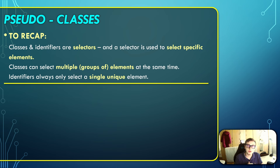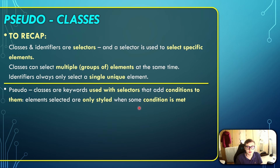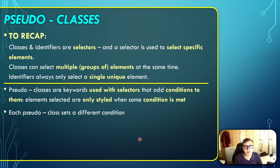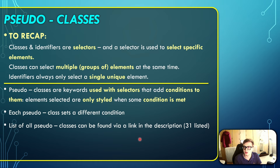Pseudo-classes are keywords used with selectors that add conditions to them. This means that elements selected with the selector are only styled when some condition is met. You can just think of pseudo-classes as the if statements of CSS. Each pseudo-class sets a different condition that needs to be met in order for the selected elements to go through with the styling, and a list of all of them can be found in the description.